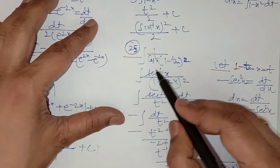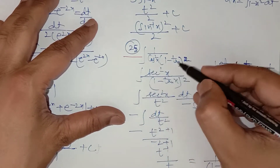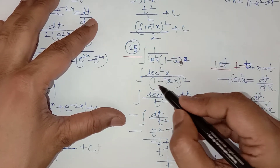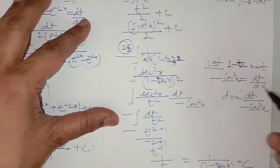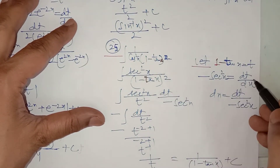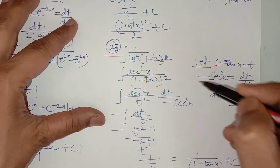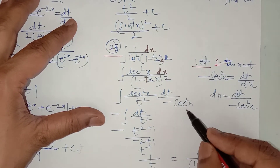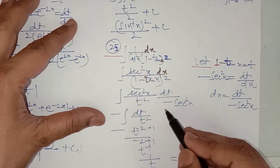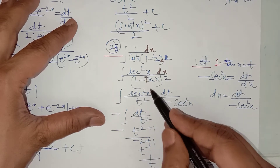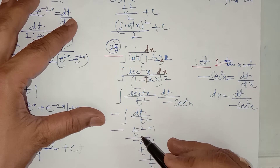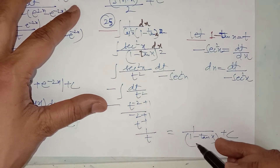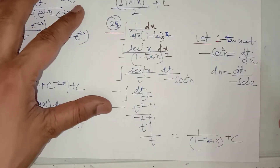In question number 25, see it carefully. You can let 1 minus tan x equal to t, and take cos square into the numerator — it will become sec square. So let 1 minus tan x equal to t; its derivative is minus sec square x. So dx equals dt upon minus sec square x. Replace the value of dx; sec square x cancels out. You have to integrate t to the power minus 2, whose integration is t to the power minus 2 plus 1 upon (minus 2 plus 1). Simplify and replace the value of t which is 1 minus tan x.